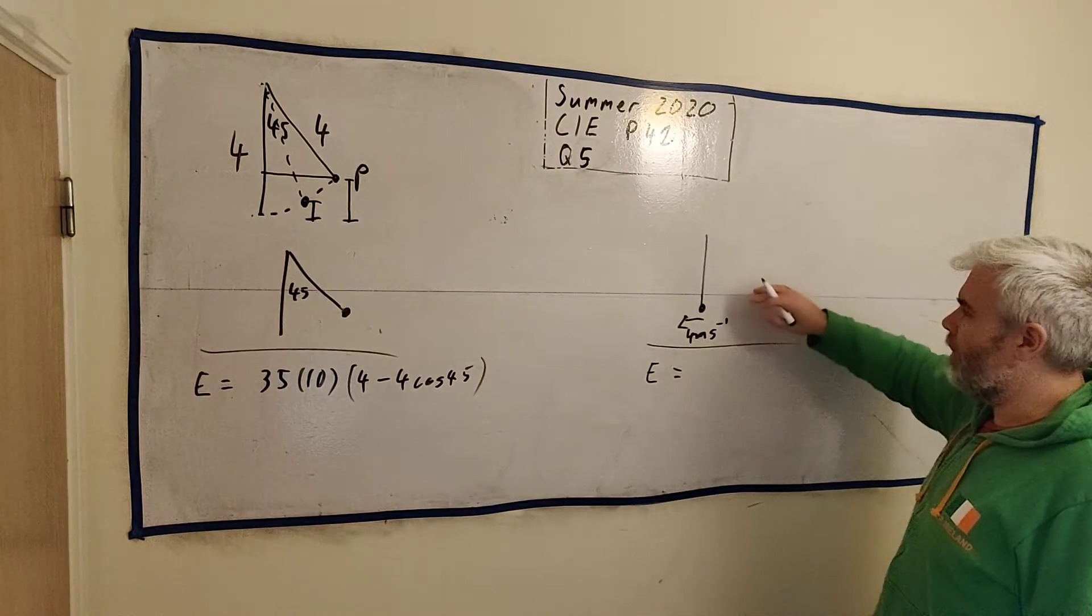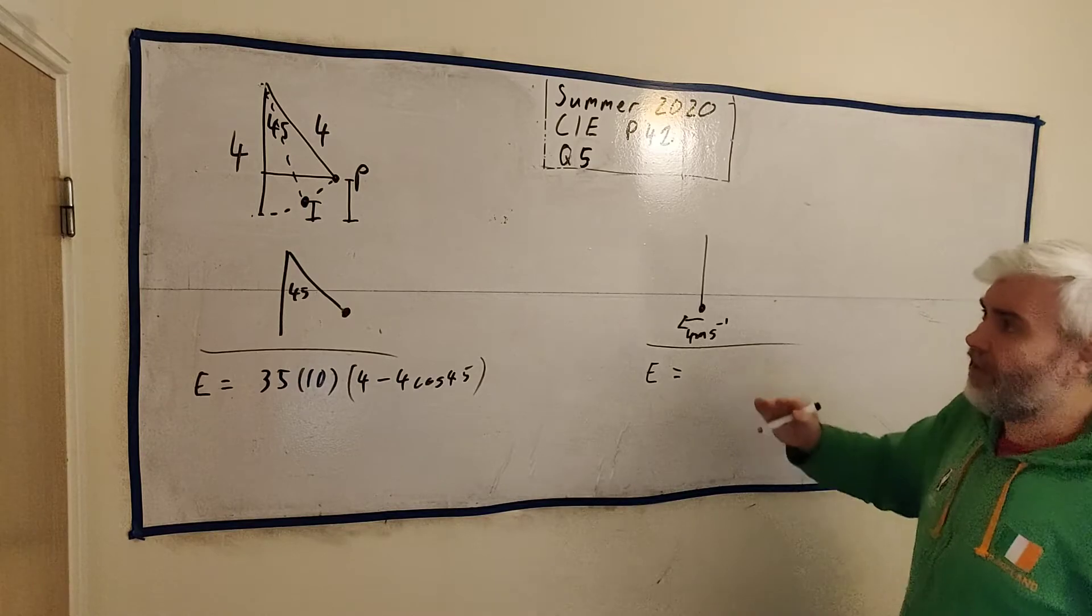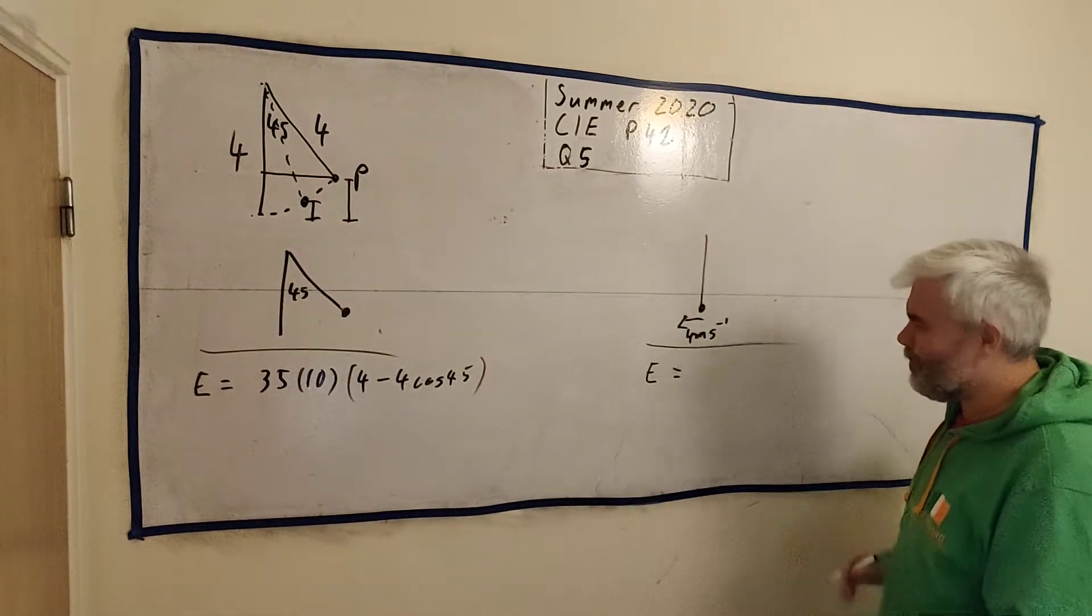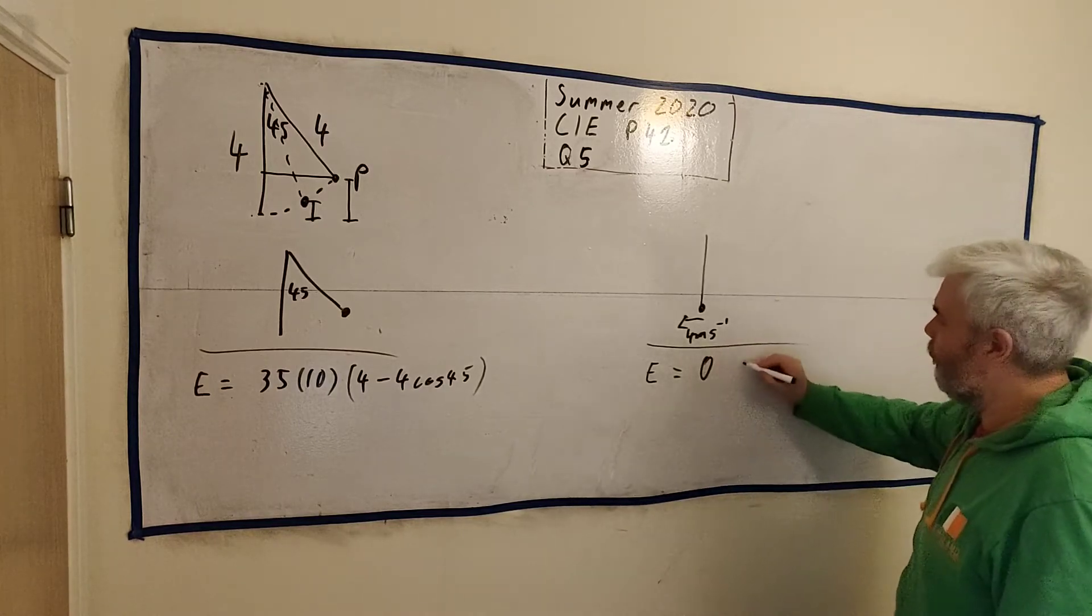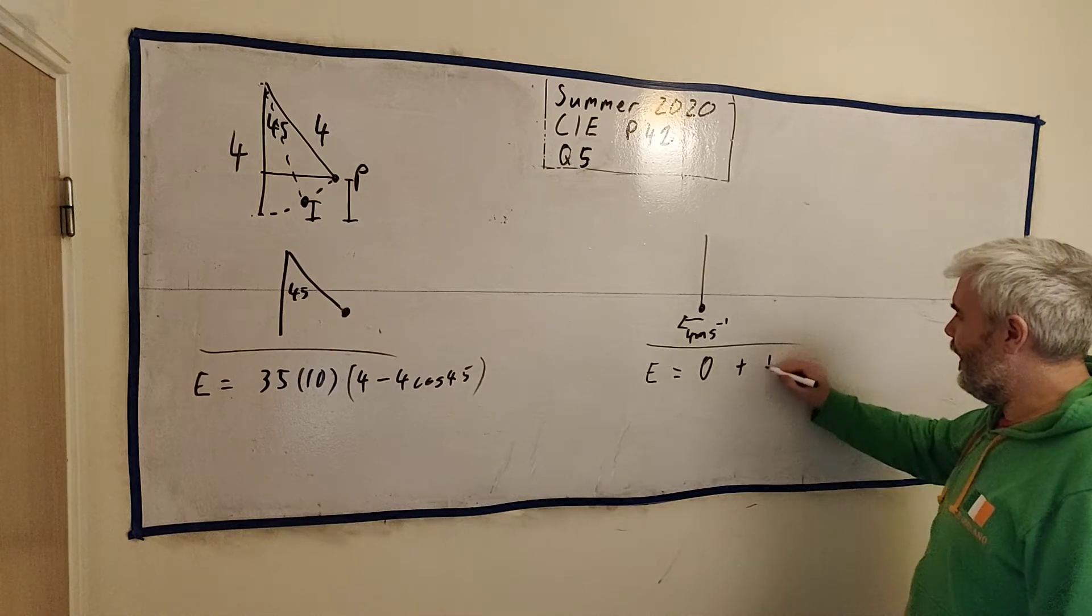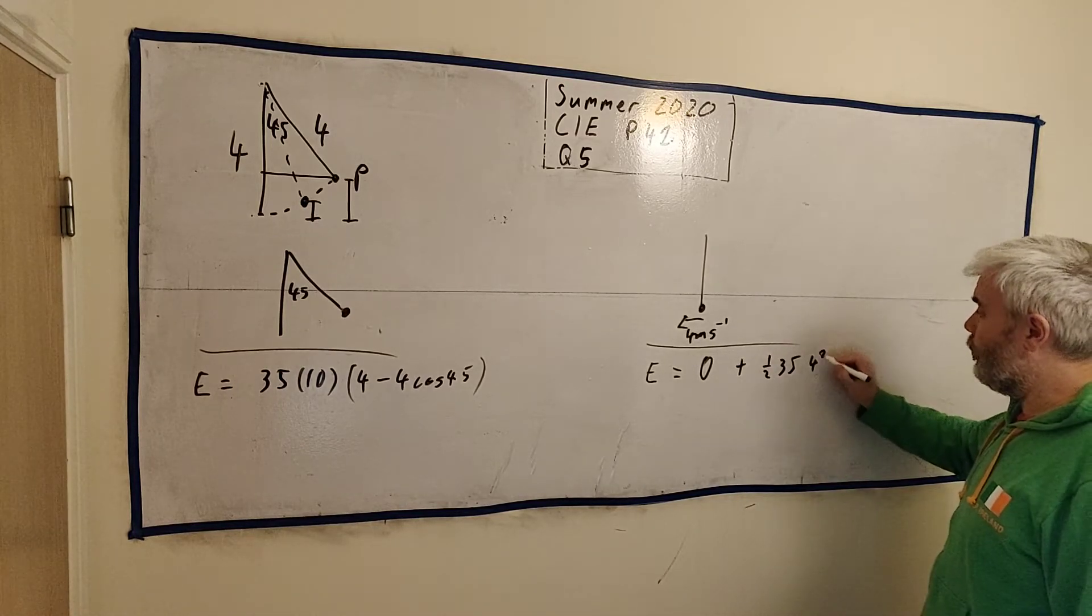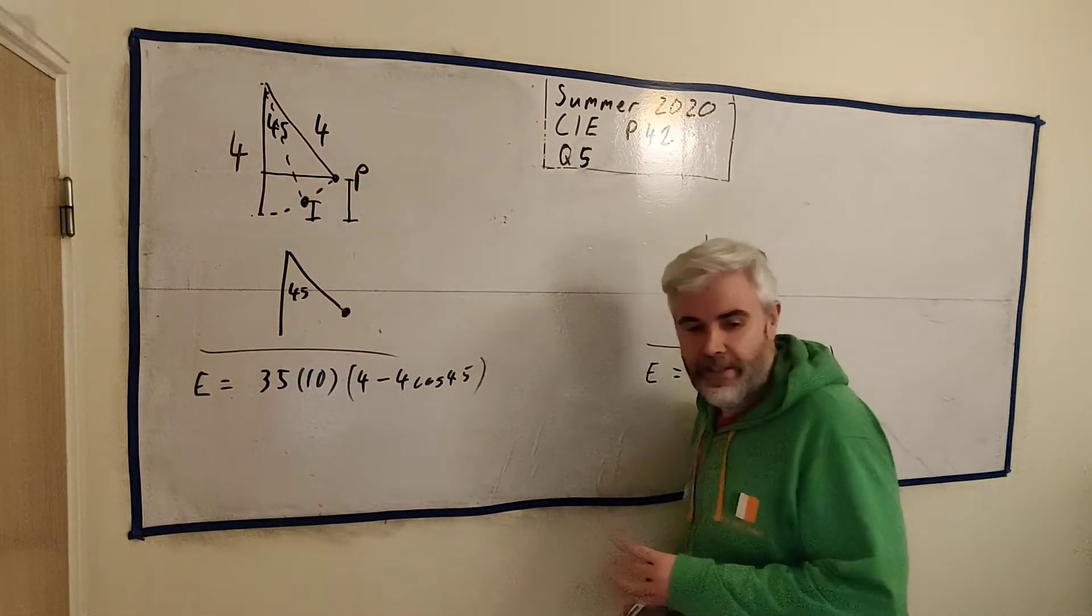In the second state, we'll work out its potential energy. Well, its height is 0 in this case. We've decided the ground here. The swing goes straight to the ground. Just skims it, I guess. It's 0. So we'll write 0 plus, then it has a kinetic energy. And that would be a half times 35 times 4 squared.